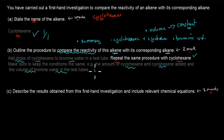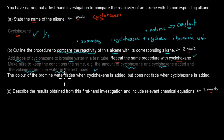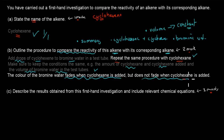Those first two points get you two marks out of two. I also noted that the colour of bromine water fades when cyclohexene is added but does not fade when cyclohexane is added — but that observation is more important for Part C.